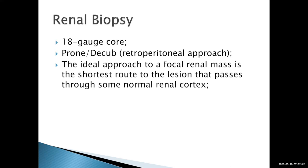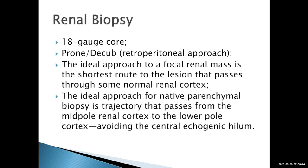The ideal approach to a focal renal mass is the shortest route to the lesion that passes through some normal renal cortex. The adjacent normal cortex allows the biopsy site to tamponade, decreasing the risk of bleeding. For a native renal biopsy, we target from the mid-pole to the lower pole, trying to avoid the central echogenic hilum. The cortex is where the nephrons are — it's what the pathologist will study. The echogenic hilum offers no diagnostic value and carries risk of bleeding into the collecting system and complications from the prominent interlobar arteries, including pseudoaneurysms.